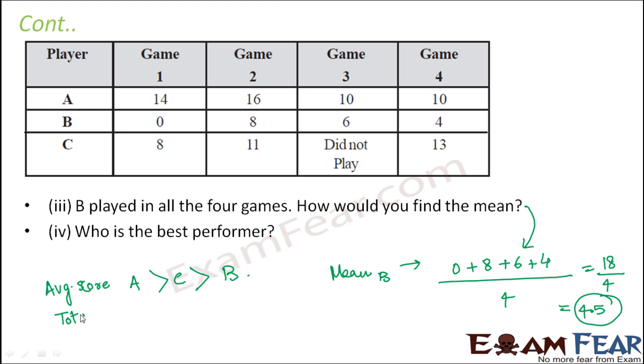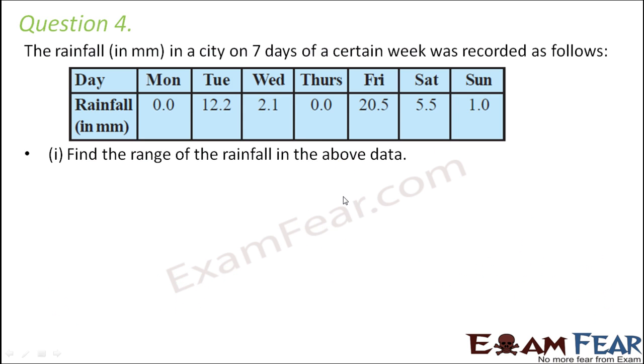Even if you look at the total score, what do you see? If you try to compare the total score, how will you find the total score? Just by finding the sum of the scores in all four games. So that also you would see that A is greater than C, which in turn is greater than B. So definitely A is the best performer.